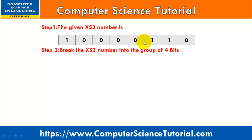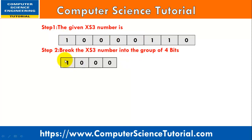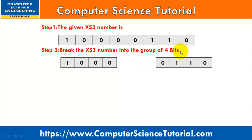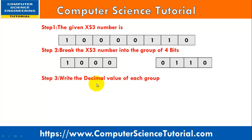Step 1: break the XS3 number into four-bit groups. So I break it as 1000 and 0110. Remember that you must group from the left-hand side.